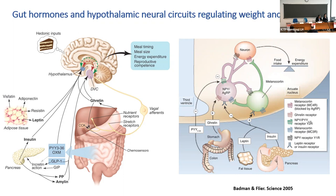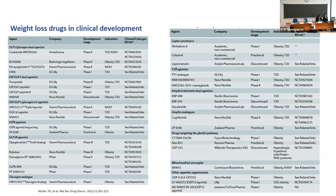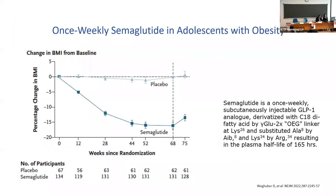These discoveries stimulated pharmaceutical companies to perform research and develop new hormonal drugs. A recent study involved semaglutide, published in the New England Journal of Medicine in December, demonstrating that subcutaneous injection once per week was able to promote substantial weight loss — about 15% — in children, adolescents, and adults. However, if you stop the injections, the disease relapses, so this is not the definitive answer.